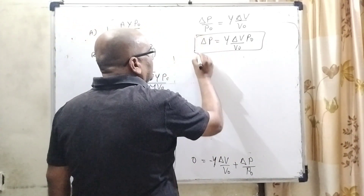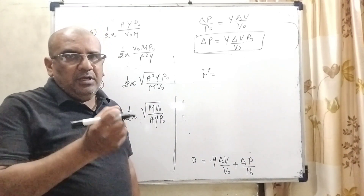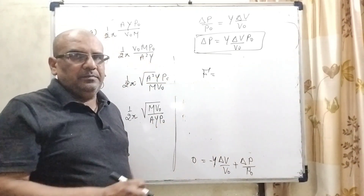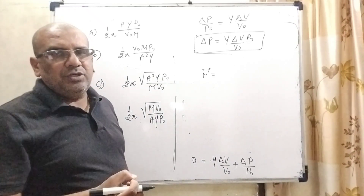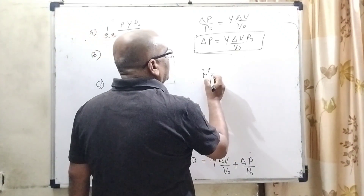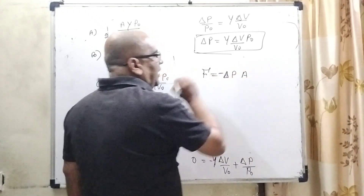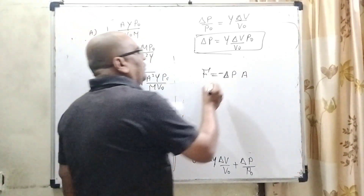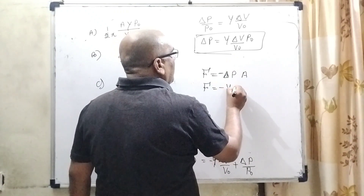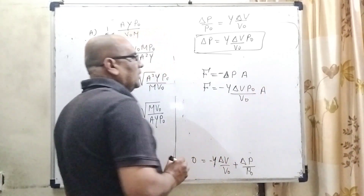Now, as we know, the restoring force is the force that opposes the applied force — when we apply force on the piston, the gas pushes it back to its initial position. So the restoring force F = −ΔP·A. Substituting ΔP = γ·P0·ΔV/V0, we get F = −γ·P0·A·ΔV/V0. And since ΔV = A·x, we substitute that in.